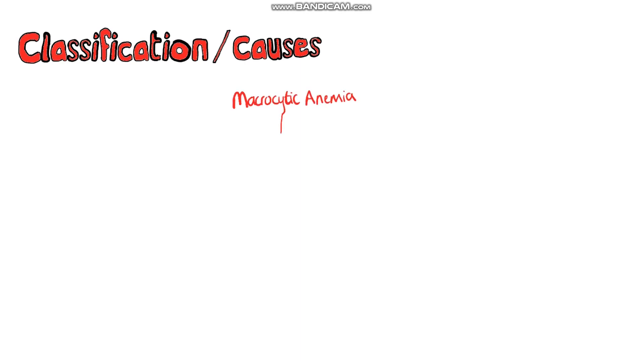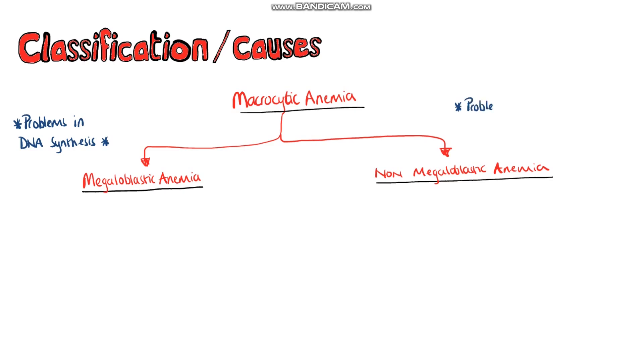Macrocytic anemia can be further divided into megaloblastic and non-megaloblastic anemia. Megaloblastic meaning we have a problem in DNA synthesis and repair, whereas non-megaloblastic anemia does not have DNA replication problems. Instead, there's a problem with the red blood cell membrane due to problems in cholesterol metabolism.